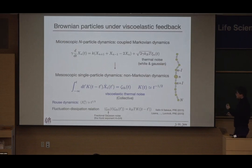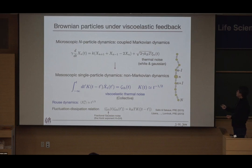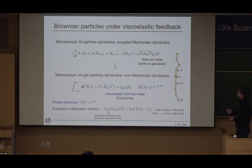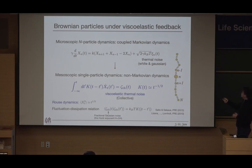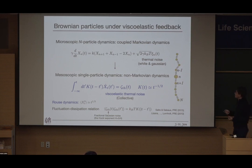Let's think about this polymer system — an N-particle system where each is a Brownian particle connected by harmonic springs, subject to ordinary white Gaussian noise. Even though each particle has Markovian dynamics, they are all connected. When you observe the motion of just one particle, it affects the rest, and feedback from the rest returns to it. So the single-particle motion should be highly non-Markovian, and mathematically you can show this system can be described by an effective one-particle equation.